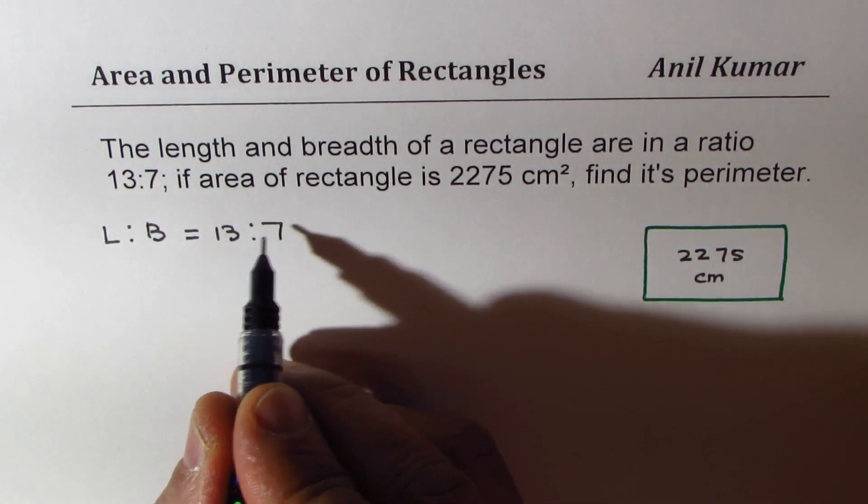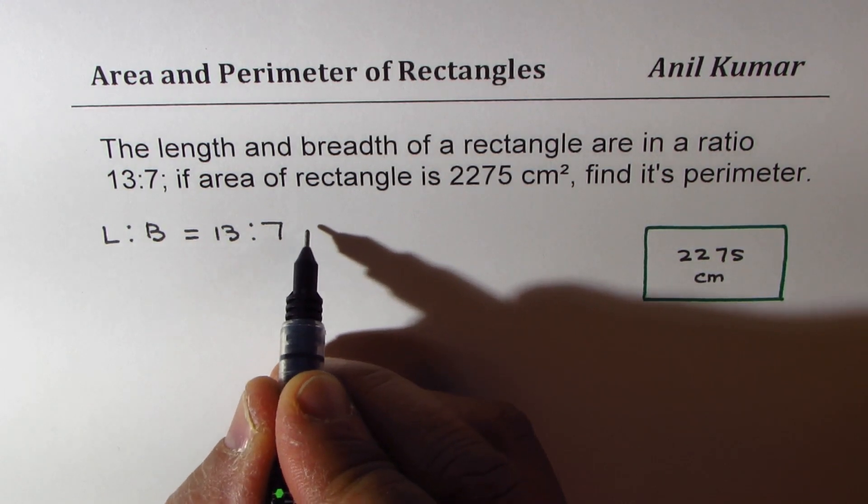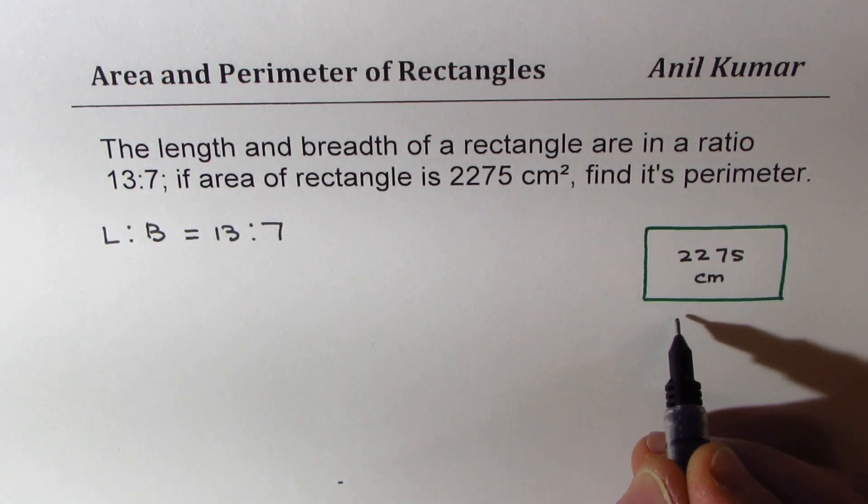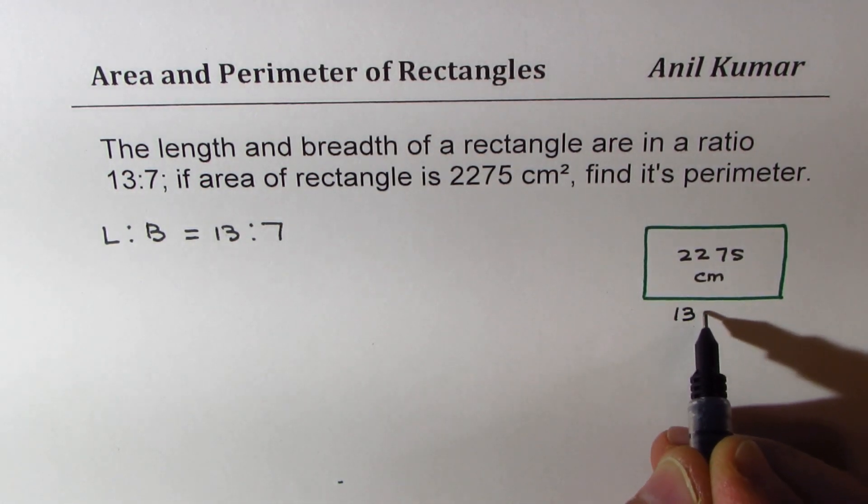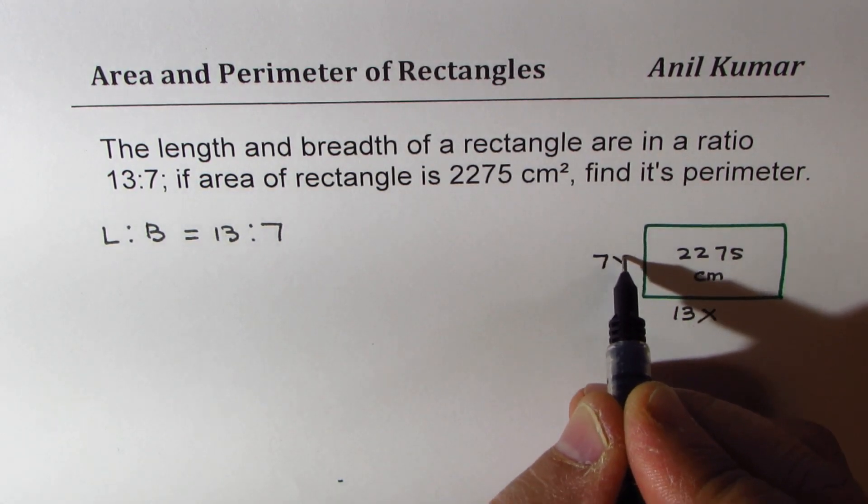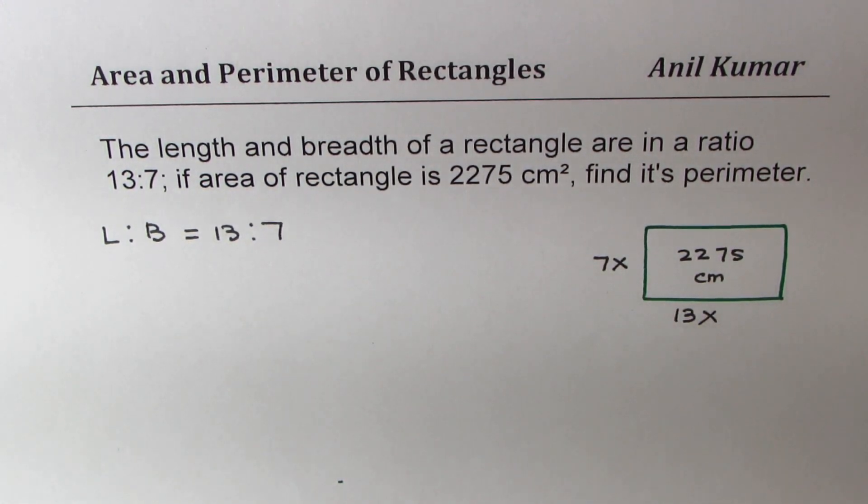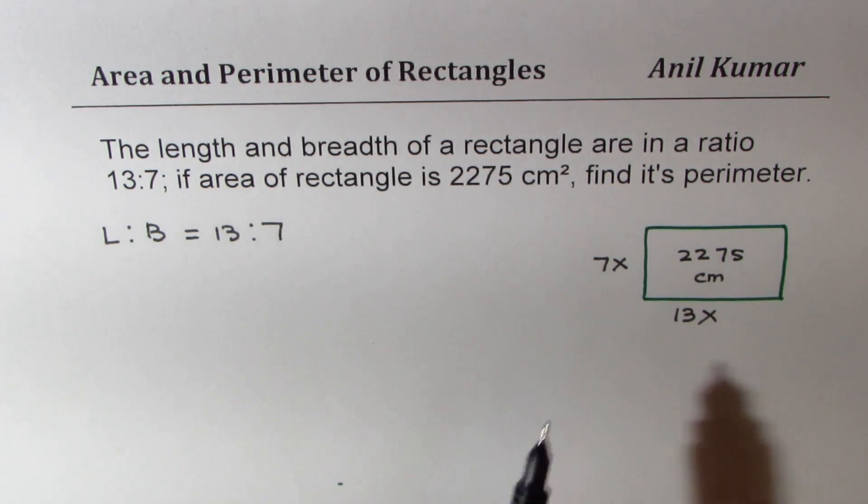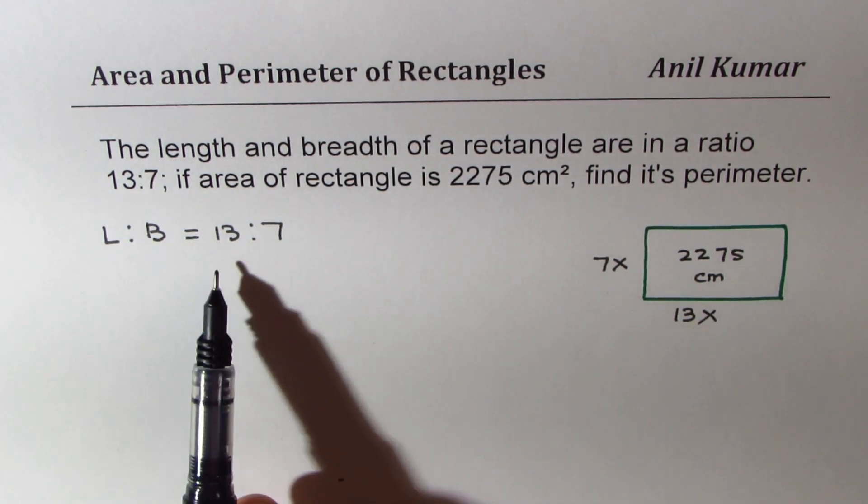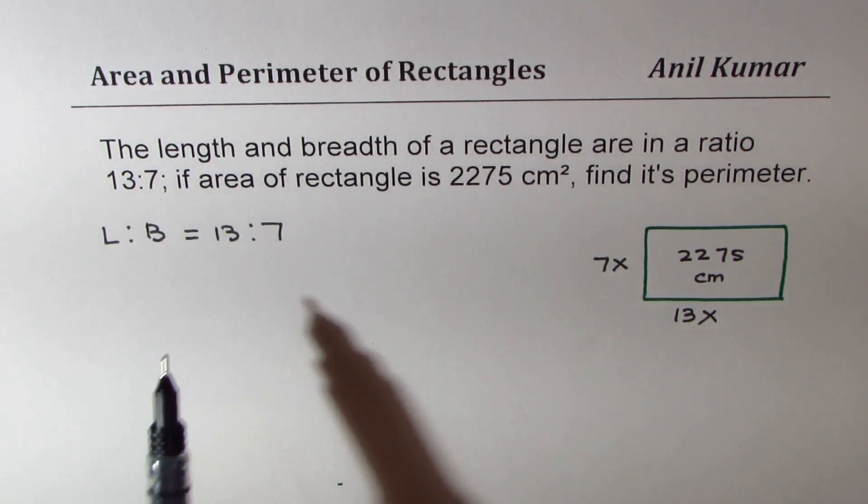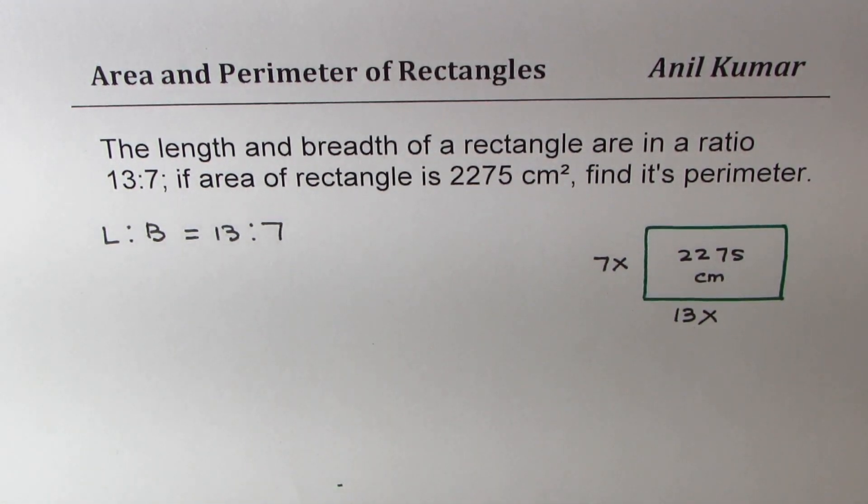That means it is 13 times something and 7 times something, so that is a constant. So it could be 13 times x and 7 times x. That is how we relate ratio with an algebraic expression - 13 times something, it could be times 2, times 3, times 4, times 5, or whatever. So that is the relation.